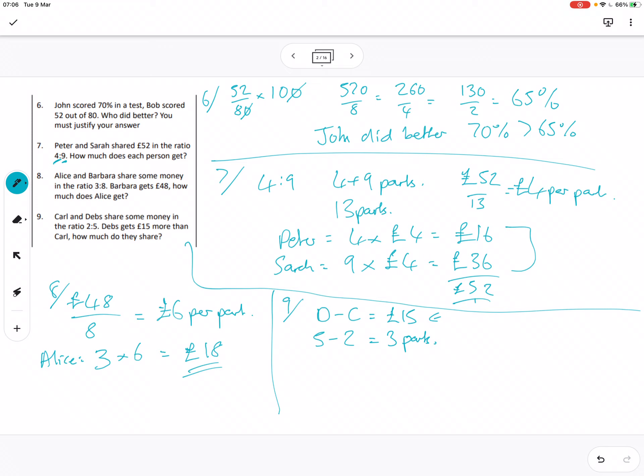So this is the absolute difference in value and this is the difference in the number of parts. So I can just then do £15 over 3 equals £5 per part. And how much do they share? So if I just add the parts up, so 2 plus 5, so the 2 and the 5 for the ratio is 7 parts. We know it's £5 per part, so it's 7 times 5, which is £35 in total.